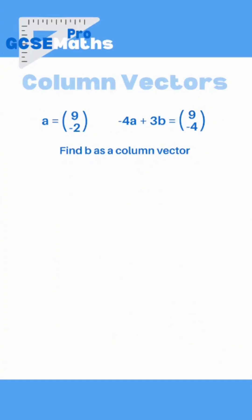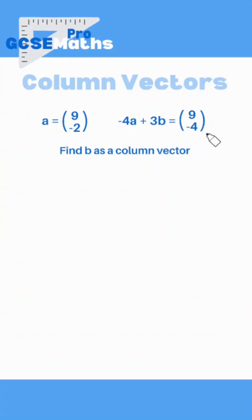Do you know how to work out column vector questions? This topic is a super easy way to gain marks so make sure you know what you're doing. Here we have vector a which is (9, -2), and then we have this other vector -4a + 3b which is (9, -4). This question is more towards higher tier students. Find b as a column vector.